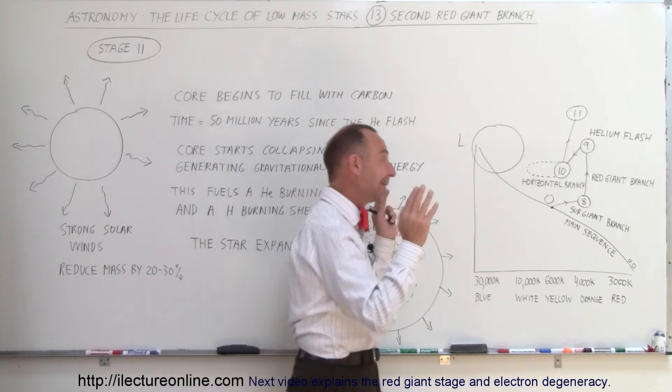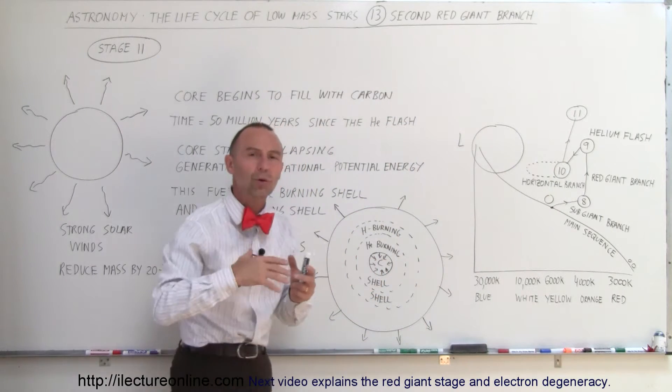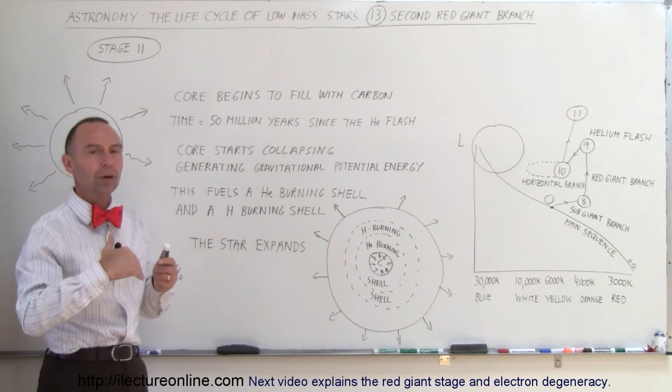This is like the second main sequence stage of the star. The first main sequence stage is when the core was fusing hydrogen into helium. The second main sequence stage would be the horizontal branch where the core is fusing helium into carbon.